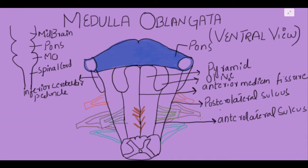From the anterior lateral sulcus, one cranial nerve originates — the 12th cranial nerve, which is the hypoglossal nerve.